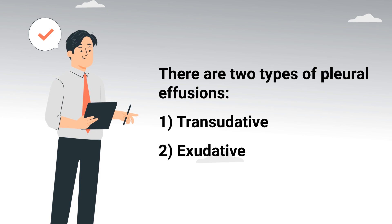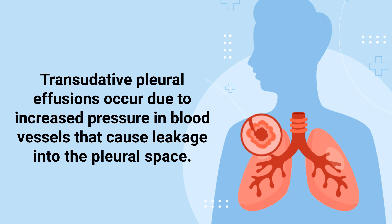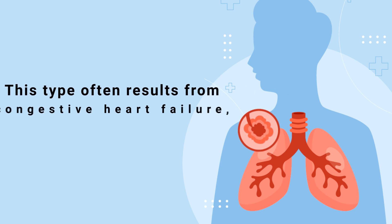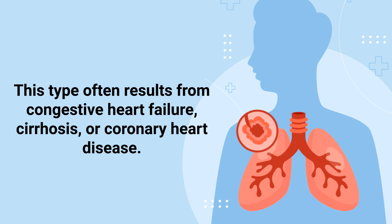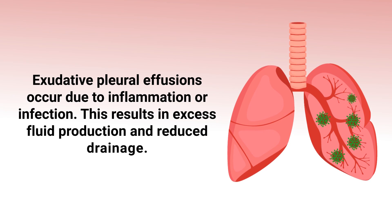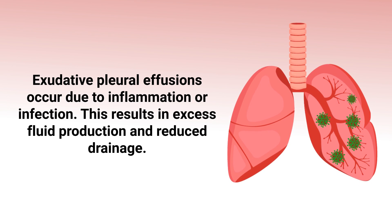There are two types of pleural effusions: transudative and exudative. Transudative pleural effusions occur due to increased pressure in blood vessels that causes leakage into the pleural space. This type often results from CHF, cirrhosis, or coronary heart disease. Exudative pleural effusions occur due to inflammation or infection.